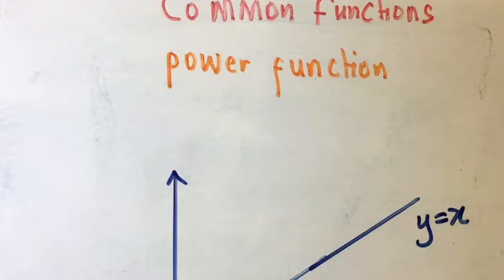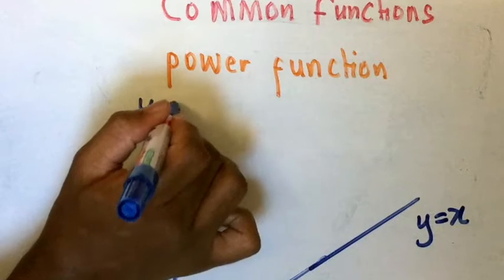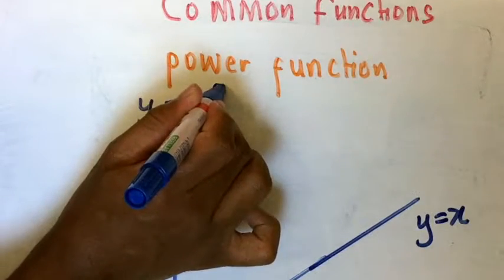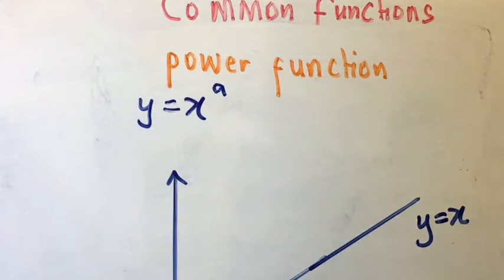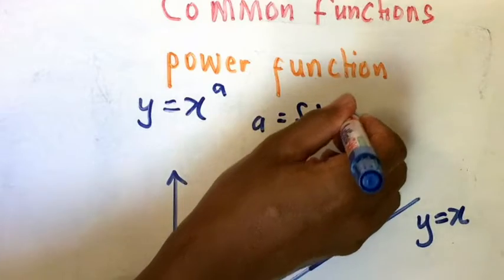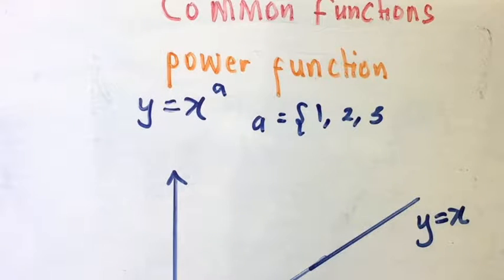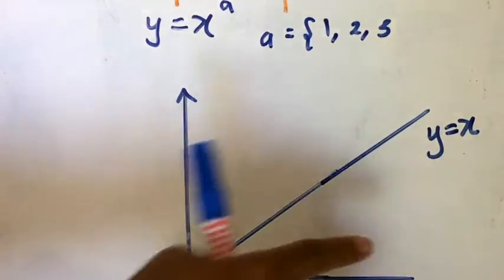A power function has the format y is equal to x power a. Here, a can be natural numbers like one, two, three, and so on. When a is a natural number, we look at what happens with y equals x to the power of one.